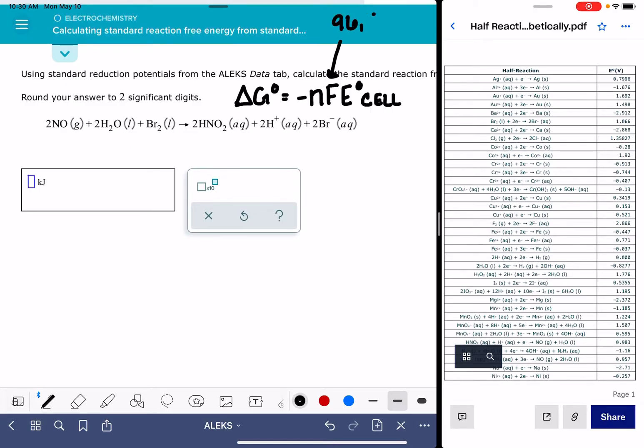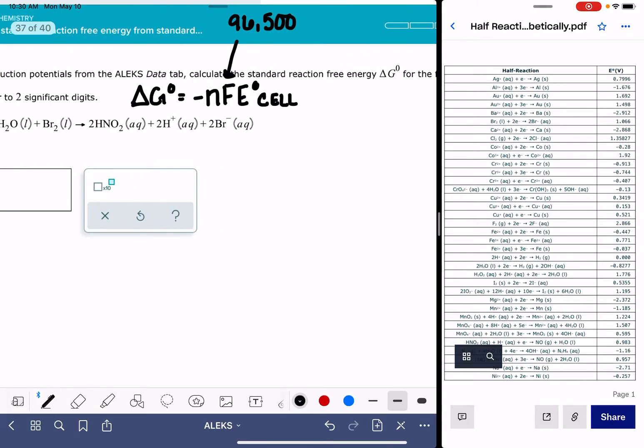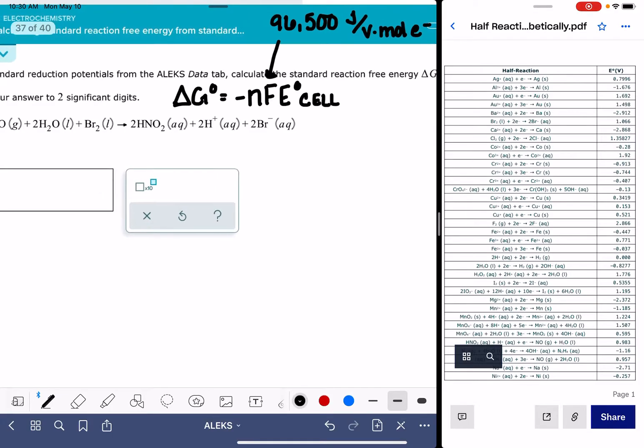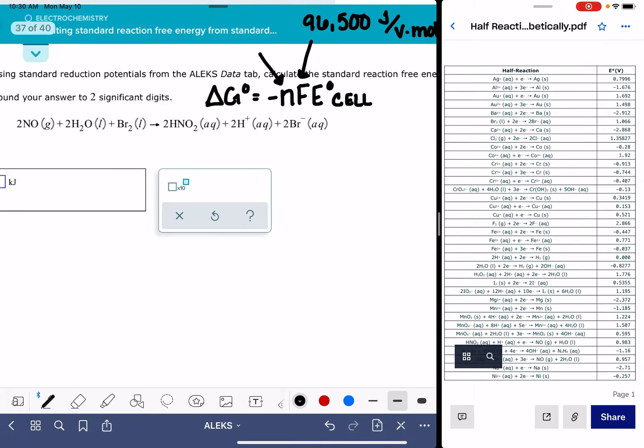Its value is 96,500. The units are kind of weird on it. It's joules, that's really the most important one to remember, joules per volt per mole of electrons. And then the n in this equation is the number of moles of electrons that are exchanged in the balanced redox reaction.